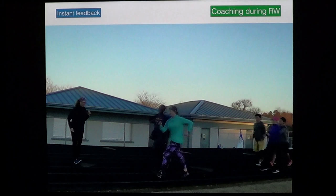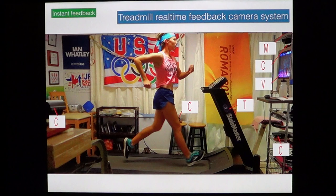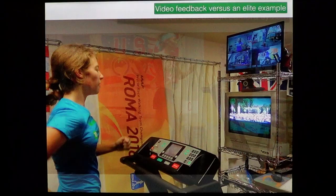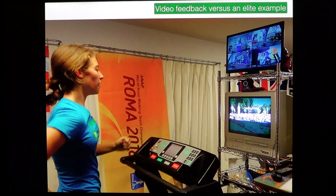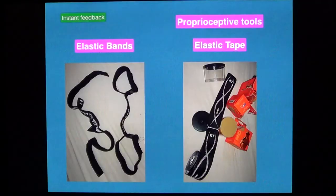Here we see a setup that we've used very successfully. We have an open-sided treadmill T which has four cameras around it — these are just security cameras, so they're fairly inexpensive. At V you can see a monitor showing a video of elite athletes, and M is the monitor at the top showing the camera views. In the athlete's view of this setup, you can see at the bottom screen the London Olympics and the top screen four views of the athlete. We can switch between views and enlarge any of these so they can see their upper body, feet, left or right side.